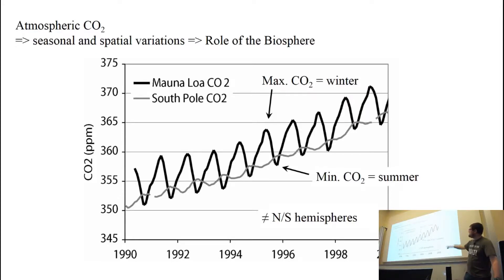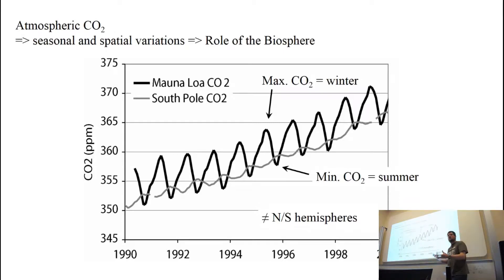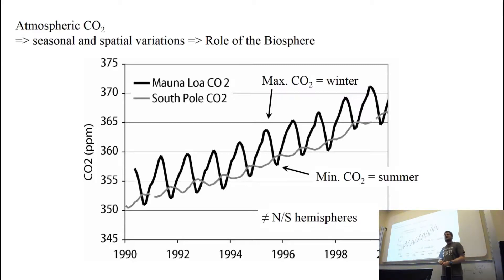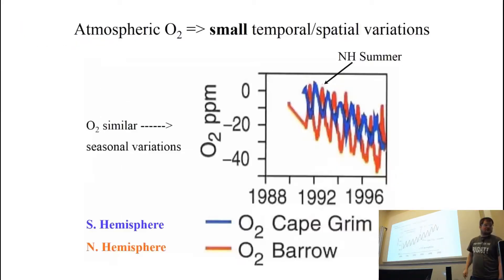Also, the magnitude of these cycles hints towards that. In the Northern Hemisphere there's more land, so there's more terrestrial biosphere, so the magnitude of the fluxes in and out of the terrestrial biosphere are much larger in the Northern Hemisphere. That explains why the Northern Hemisphere curve has a bigger seasonal amplitude cycle.